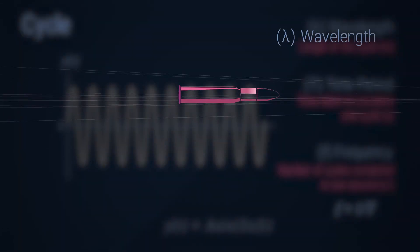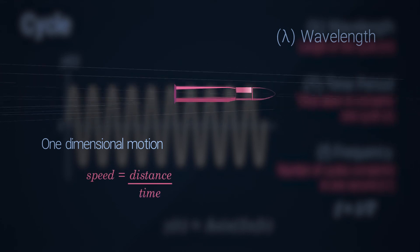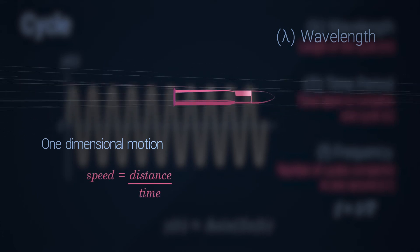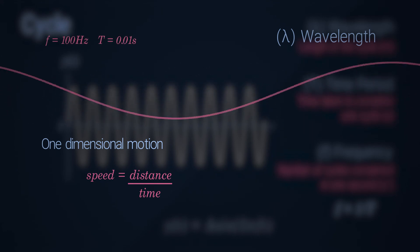Recalling elementary physics of one dimensional motion, the speed of a body is given by the distance it covers over the time taken to cover it. Let's apply it to the realm of audio, and consider the sound wave as a body.